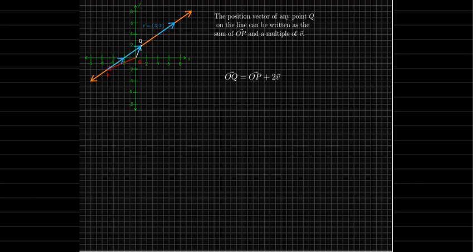Following the line means taking a multiple of the direction vector. In this case, the position vector for point Q is the same as going to point P and then going twice the vector V. So I want to know the position vector going from the origin to point Q. I could go there directly or I could first go to P and then go twice the length of V in the direction of V.